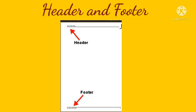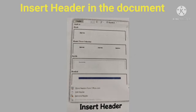With Word, you don't have to manually type the page number on every page. Footer gives you the option to insert page numbers on every page. Similarly, header allows you to add the title of the book or chapter name at the top of every page. Header is placed at the top of the page while footer is placed at the bottom. Header and footer can also include text or graphics.